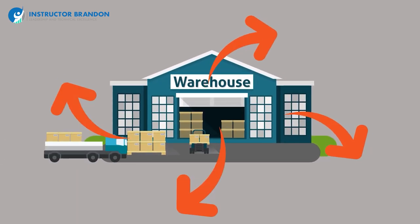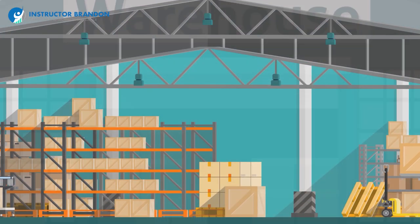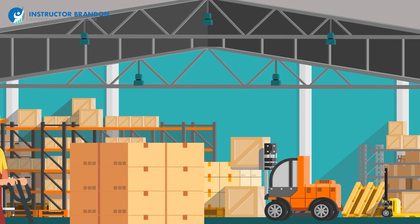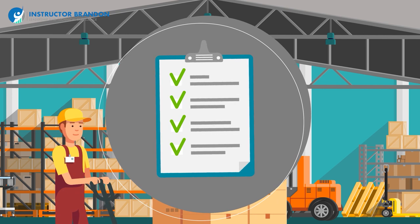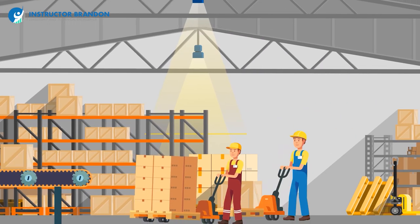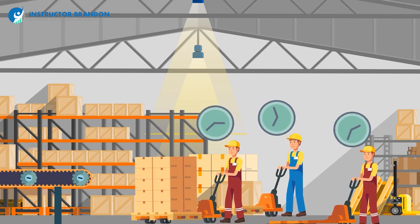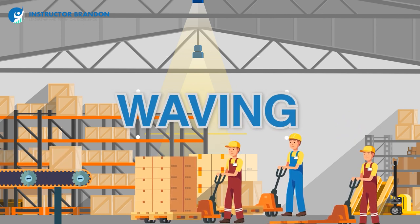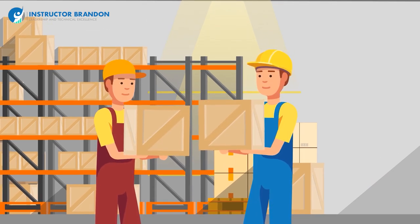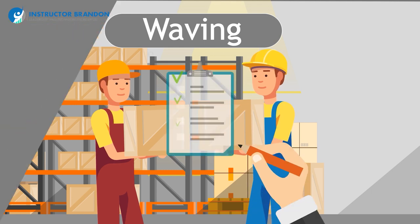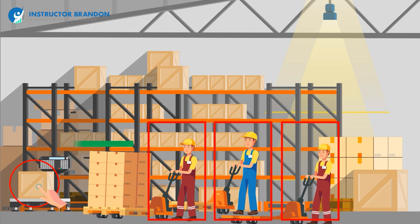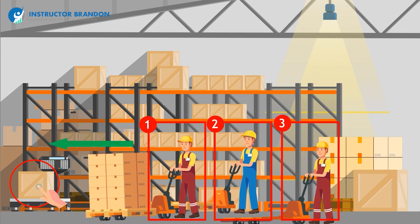Warehouse throughput is extremely dependent upon space. One of the issues you encounter when picking and trying to pull as many items as quickly as possible for a sales order is being able to fit as many people as possible into a certain segment of space. To get around that, we oftentimes have to utilize waving, which involves scheduling people based upon warehouse space availability to pick at predetermined times, preventing bottlenecks like backed-up lines and allowing people to work efficiently.